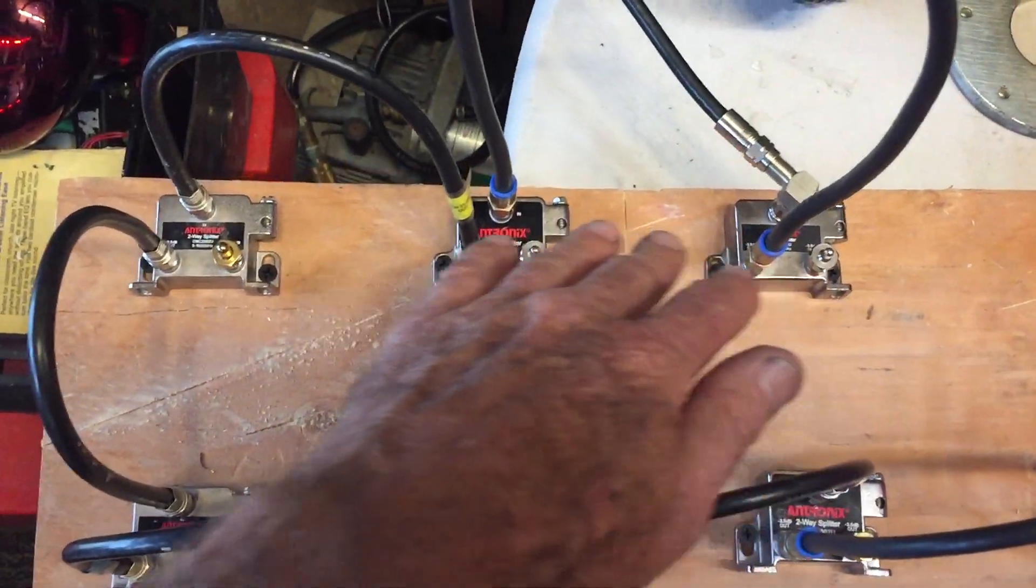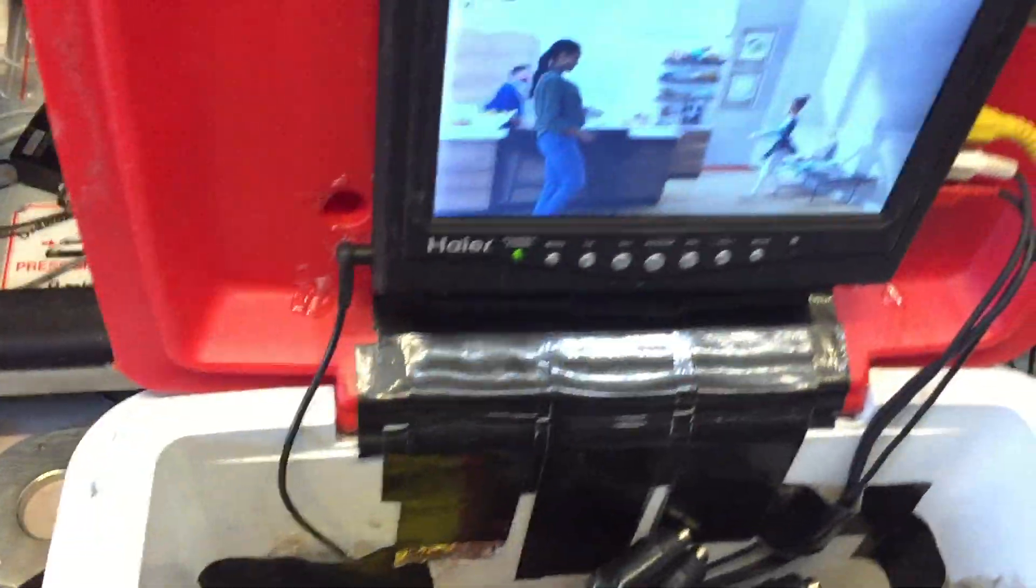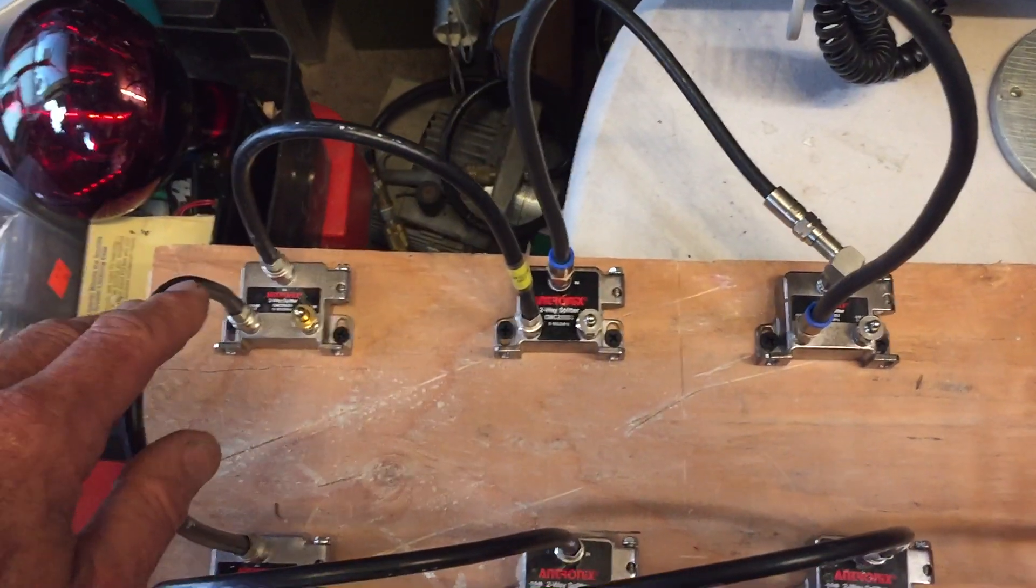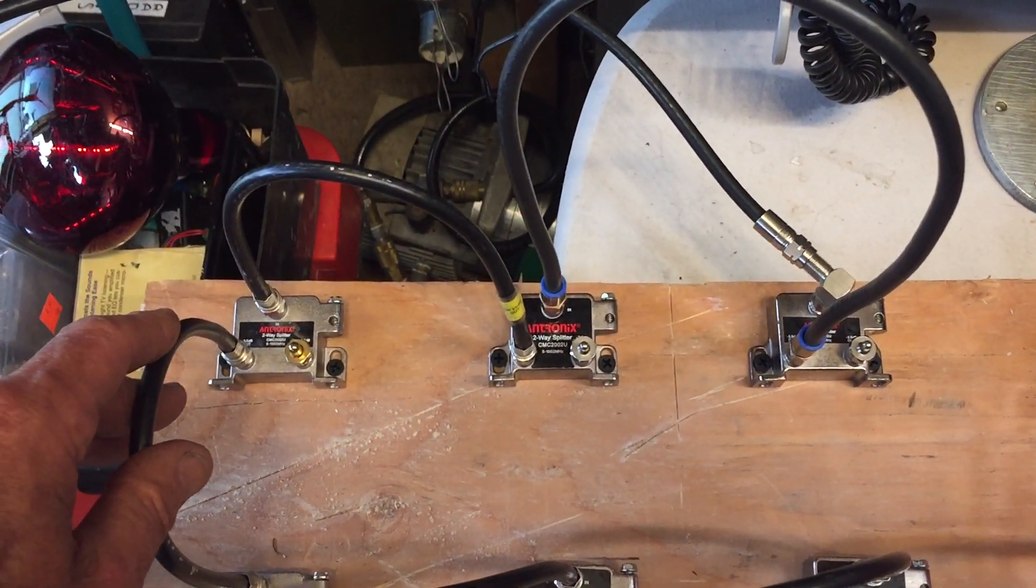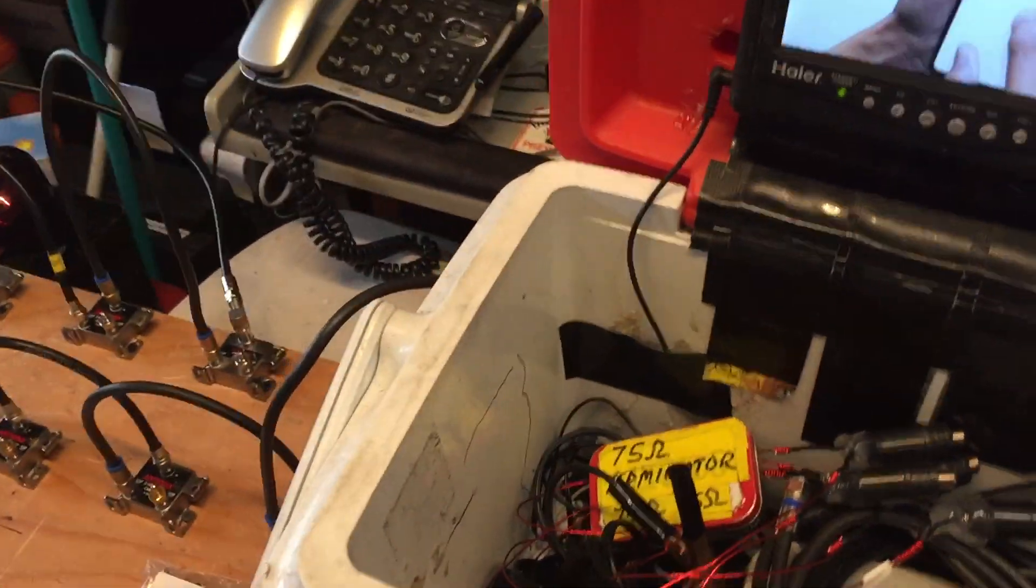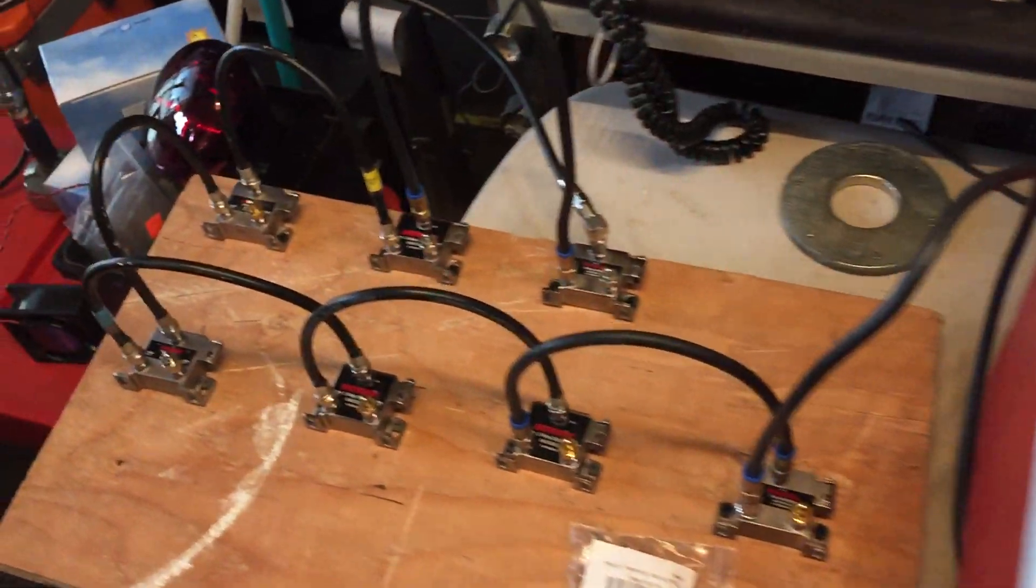Basically what I did was I hooked up a TV to three different splitters that are all hooked together. I guess you could call that daisy chaining them. And I wanted to see what it did to the signal as far as weakening it. Much to my surprise, I barely saw any change on my signal meter.